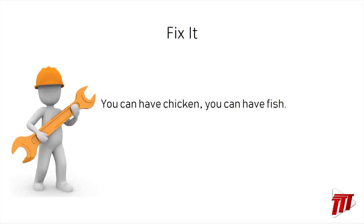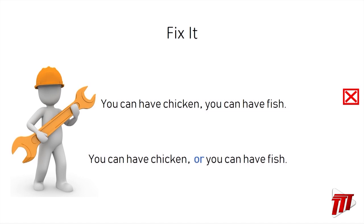Let's look at another one: "You can have chicken, you can have fish." This is a comma splice — two independent clauses joined by a comma. What can we do to fix this? You could write "You can have chicken. You can have fish." But let's try it with a coordinating conjunction: "You can have chicken or you can have fish." Here we have a compound sentence with the independent clause "you can have chicken," the coordinating conjunction "or," and the independent clause "you can have fish."